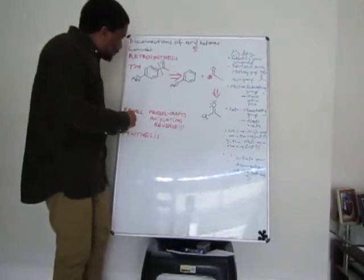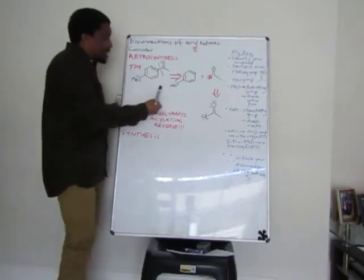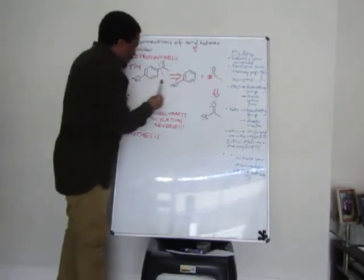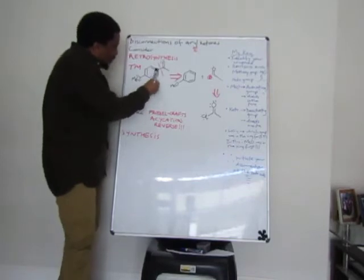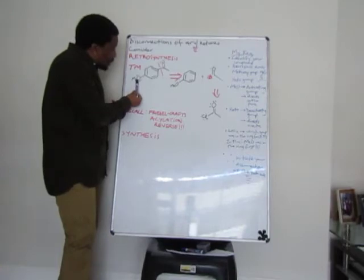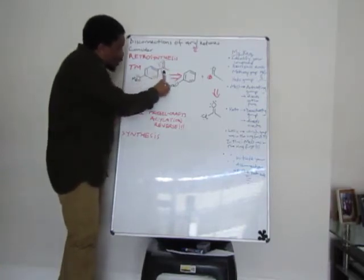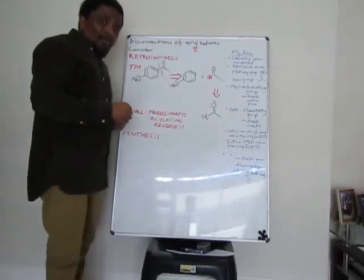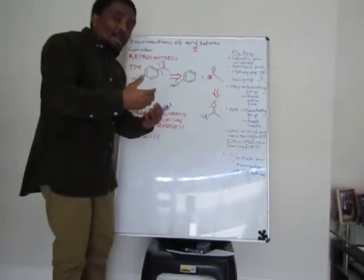For example, looking at this compound here, I can see there is a benzene ring. This benzene ring is bonded to a methoxy group on one side, and bonded to a keto group on the other side. So you've got two groups on the benzene ring.